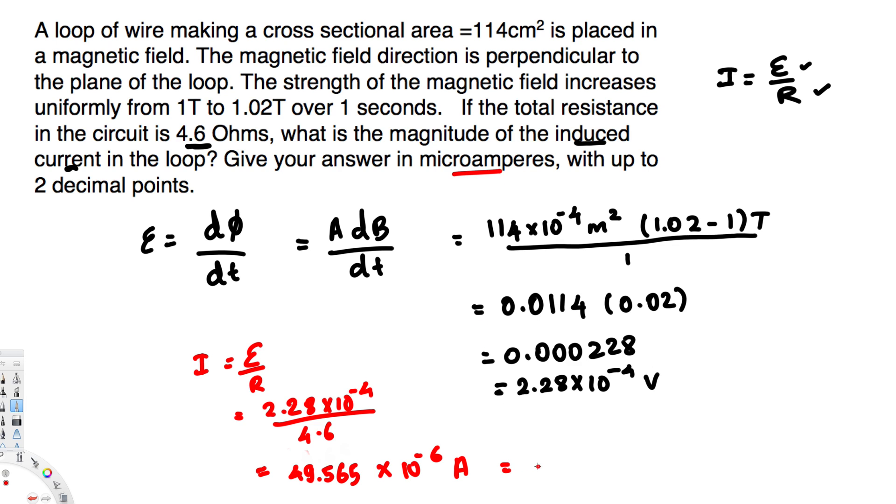Since they are asking in microamperes we can write this as 49.57 microamperes, because this is two decimal points. That's going to be the final answer: I is equal to 49.57 microamperes. And that's how we do this kind of problems. I hope this helps, thanks for watching.